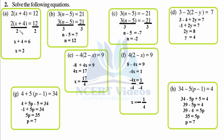Part a: 2 times (x plus 4) equals 12. Get rid of 2 by dividing both sides by 2. 2 cancels, x plus 4 equals 6. Transposing 4 to the right-hand side, x equals 6 minus 4, so x equals 2.